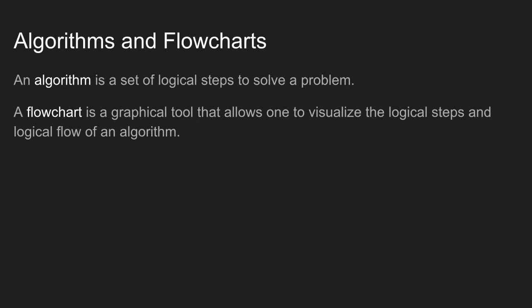So an algorithm just lists an organized set of steps to solve a problem. A flowchart is a graphical tool that lets us visualize an algorithm. It is a tool that allows us to organize our algorithm's flow and visualize it.